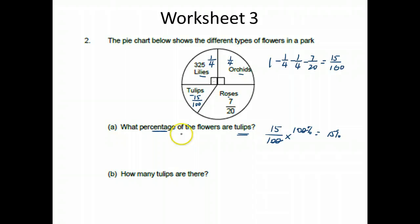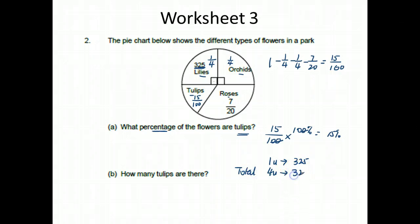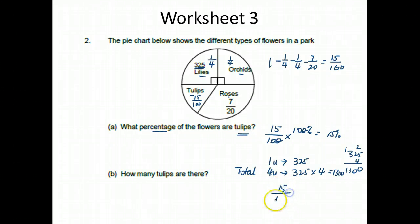How many tulips are there? First I must find the whole. Given that roses is 324 and roses is one-quarter, so 1 unit is 324 and the total is 4 units, giving 325 times 4, which is 1,300. Then the number of tulips is 15 out of 100 times 1,300, which is 15 times 13, giving 195 tulips.